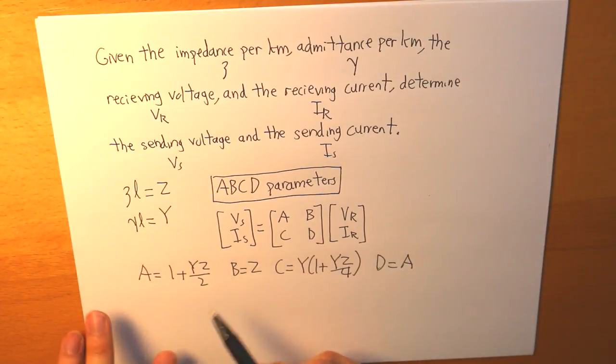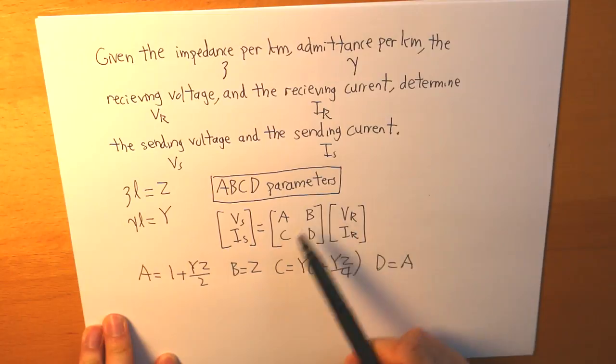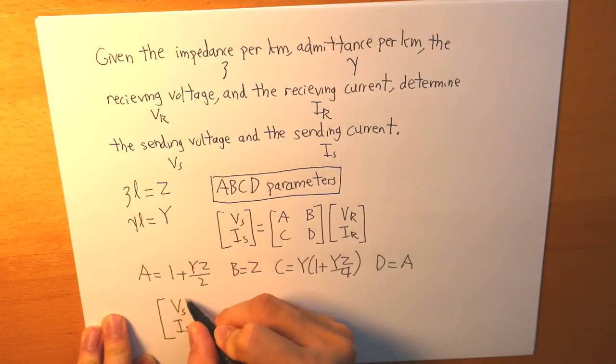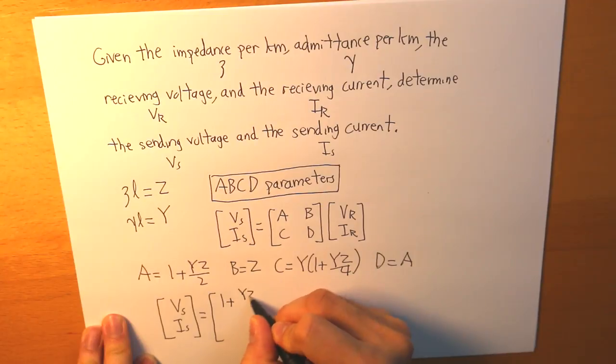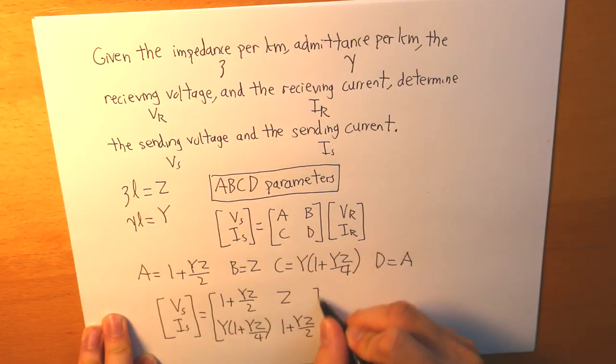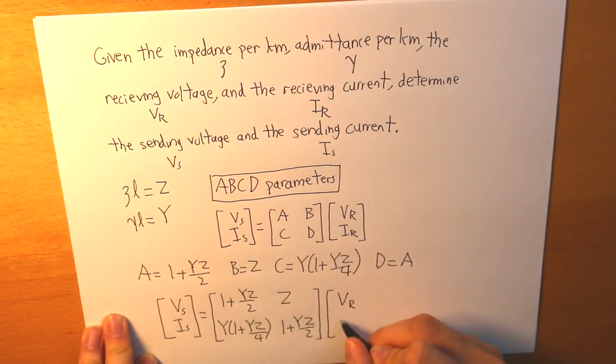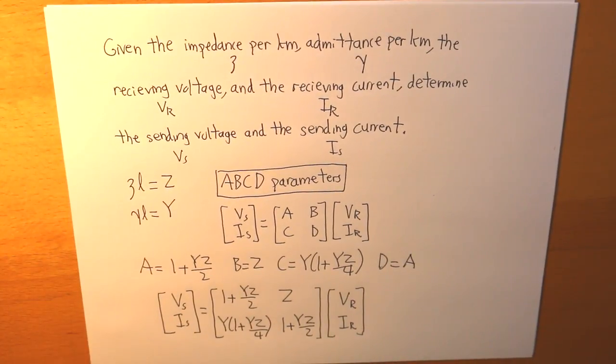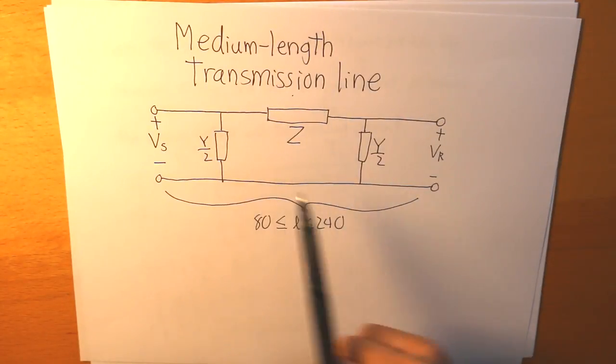And this is how our final matrix, our ABCD parameter, is going to look like. So, we have VS and IS. And then 1 plus Y over Z over 2. Z here, Y times 1 plus YZ over 4. And then we have 1 plus YZ over 2 here again. And then we multiply that by VR and IR. And this is what we get, our final equation on determining our sending voltage and sending current in a medium length transmission line.